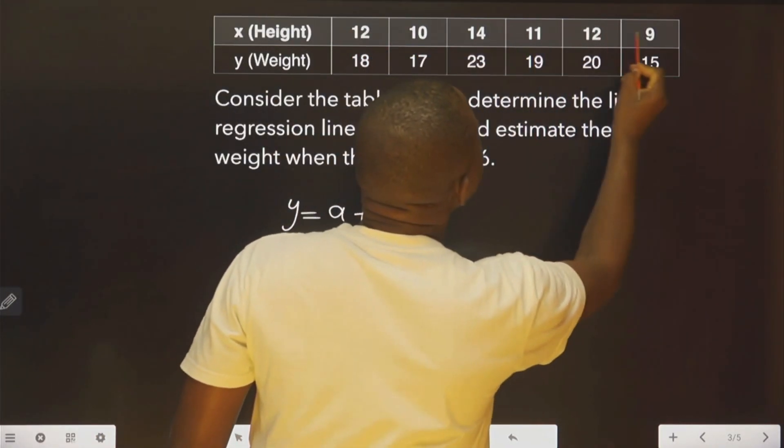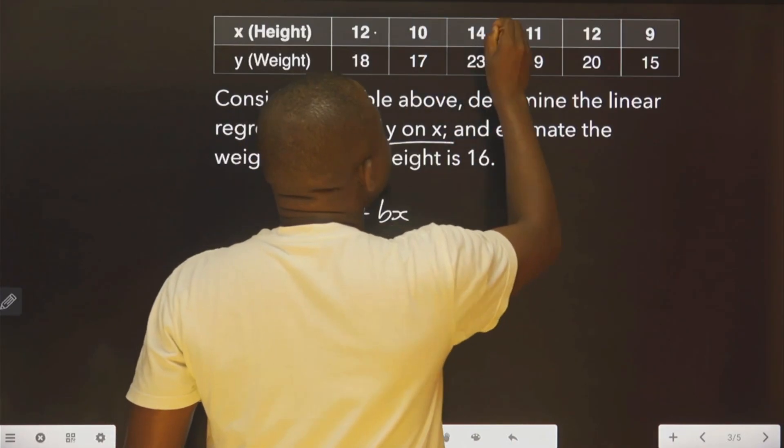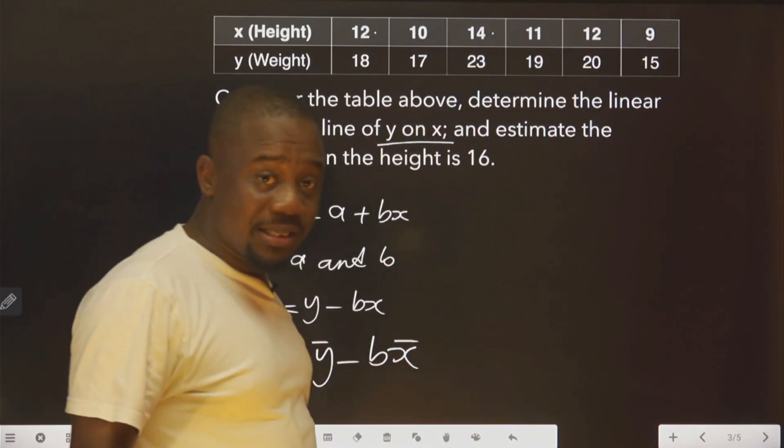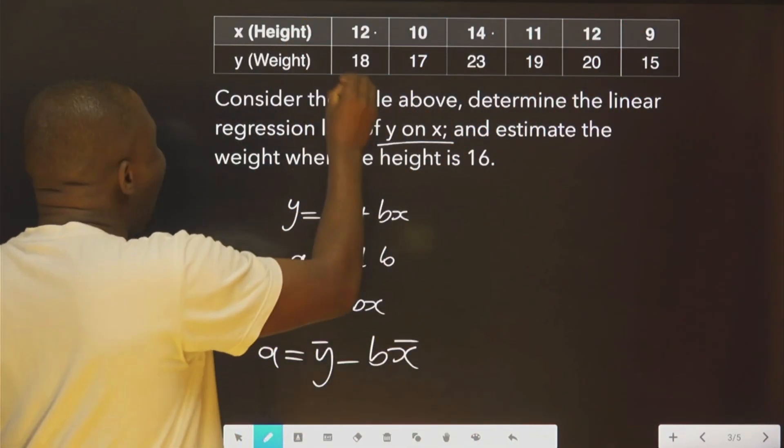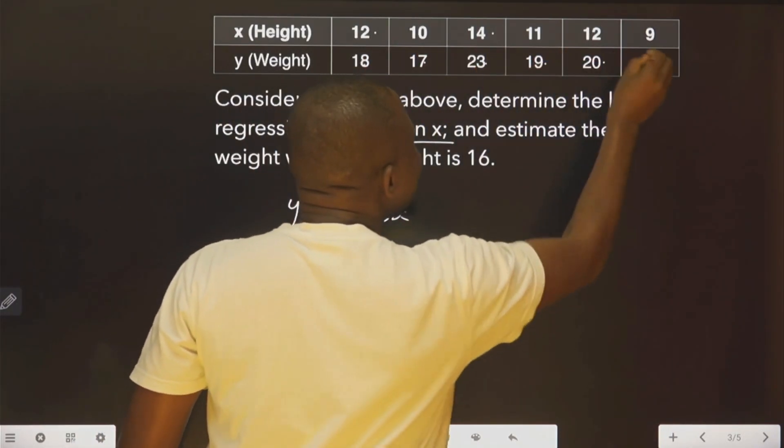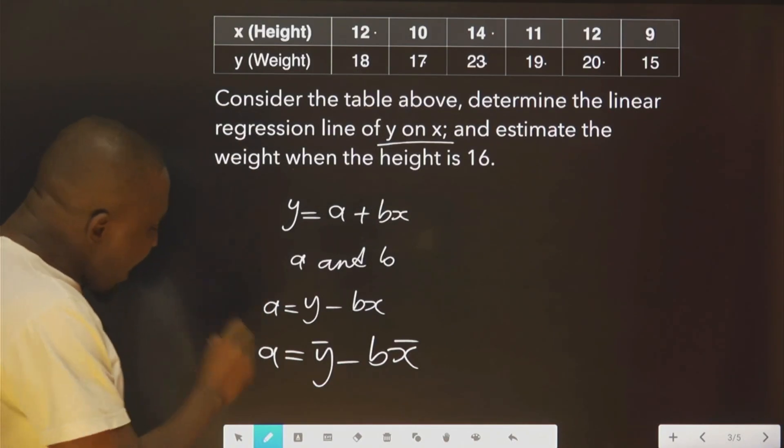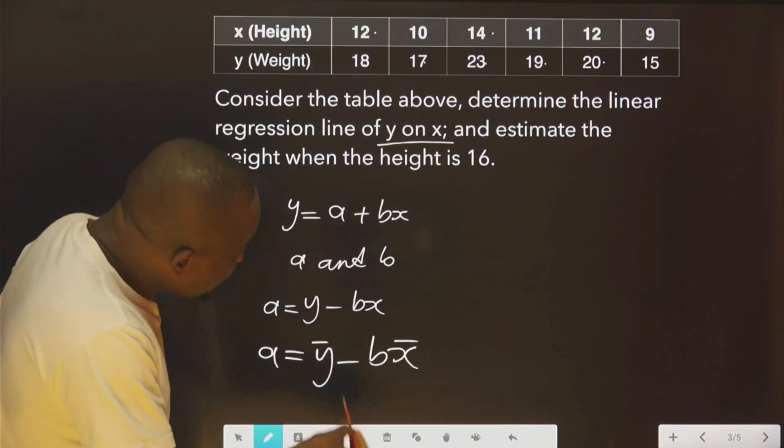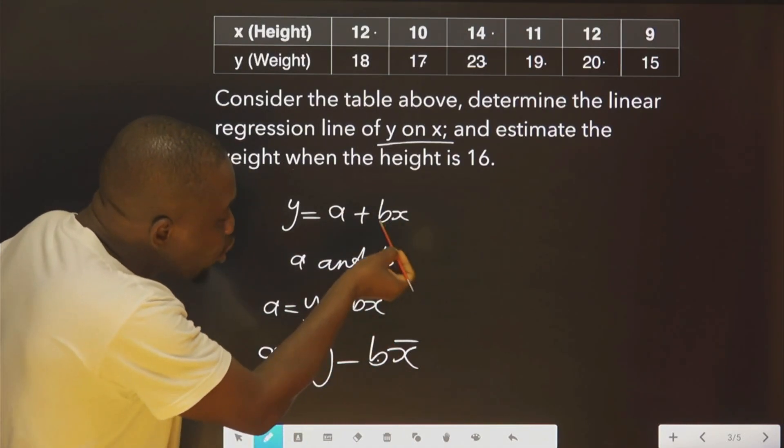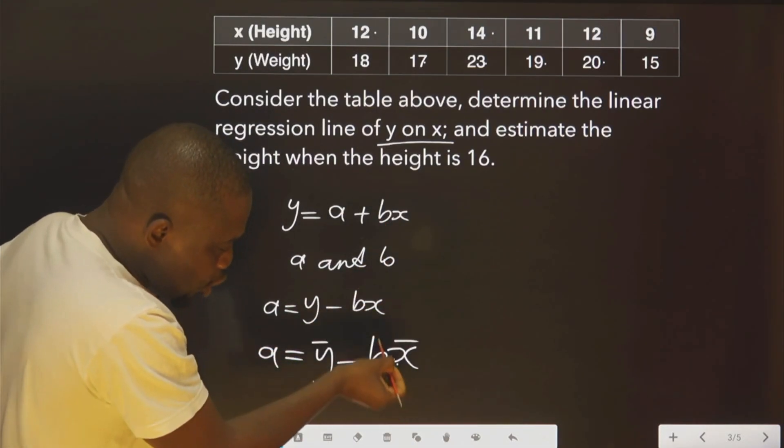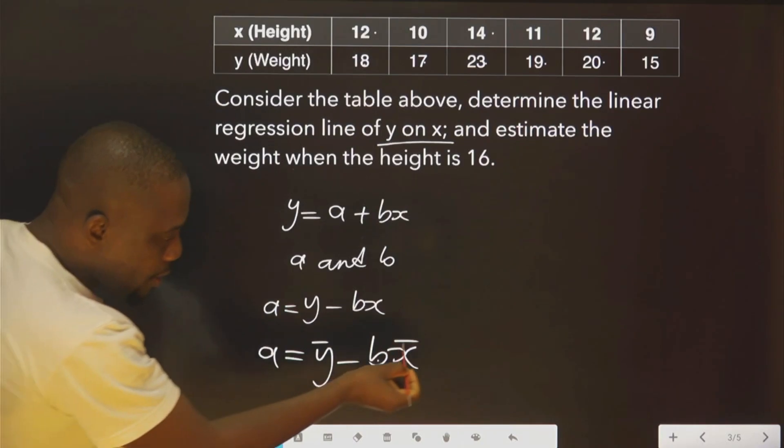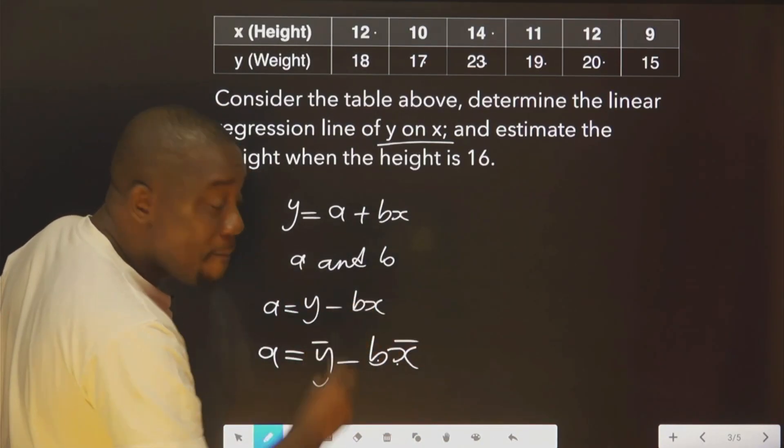For the mean of y, you add everything, divide by 6. So here, to get a is the mean of y minus b, which you are going to get first, because you need to get b before you can get a, multiplied by the mean of x.